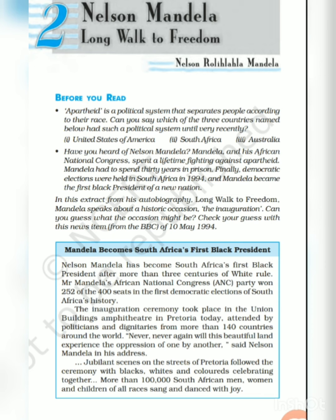This particular chapter is based on one particular word: apartheid. Apartheid is a political system that separates people according to their race — in simpler words, discrimination on the basis of color, caste, creed and religion. This is not something new; we have many illustrations in our past as well.